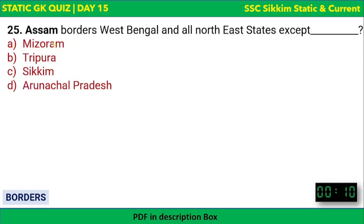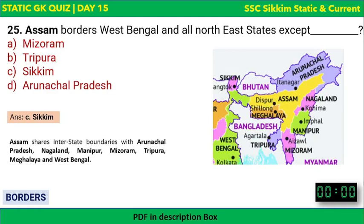Assam borders West Bengal and all northeastern states except which one? The options are Mizoram, Tripura, Sikkim, or Arunachal Pradesh. The correct answer is Sikkim — Sikkim does not share a border with Assam. Assam shares interstate borders with Arunachal Pradesh, Nagaland, Manipur, Mizoram, Tripura, and Meghalaya — six northeastern states — plus West Bengal, making seven states in total.